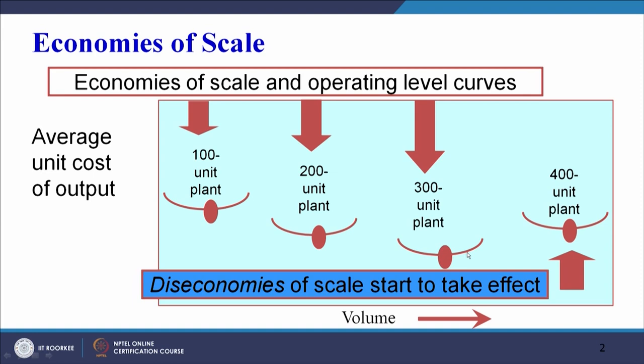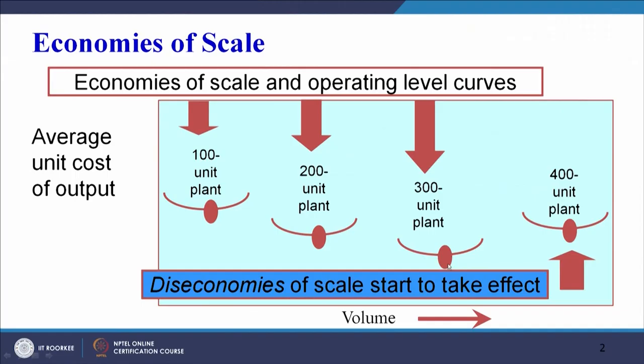The diseconomies of scale start to take effect after the three hundred unit plant. There are two questions: first, why is the average unit cost reducing up to the three hundred unit plant, and second, why does it start to increase after that point?